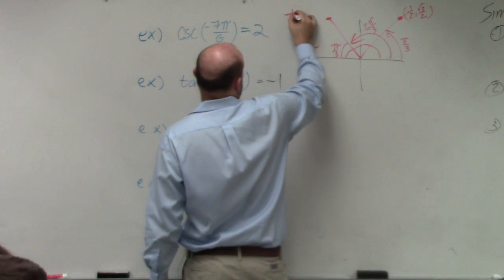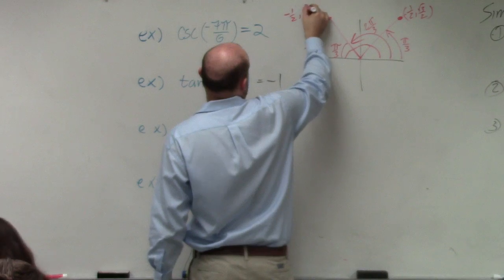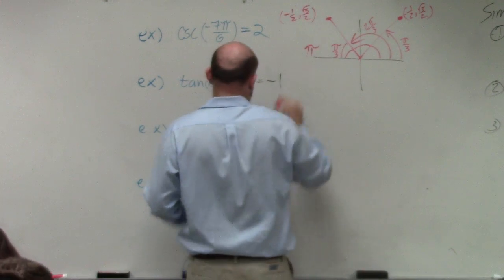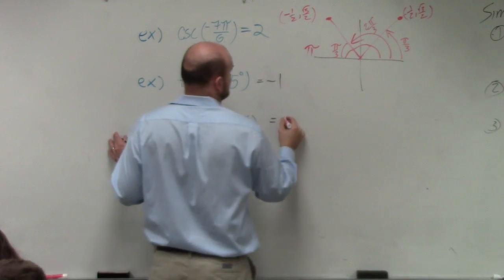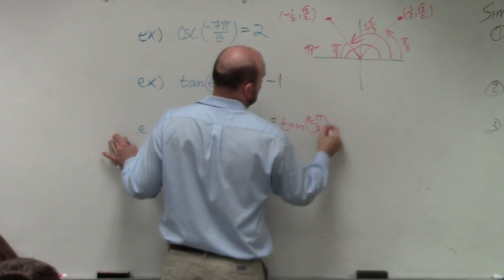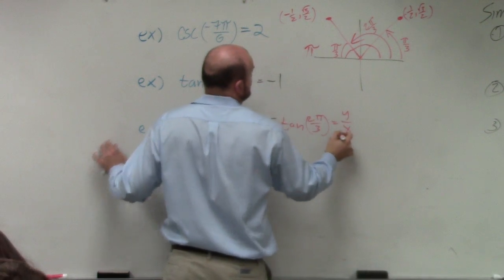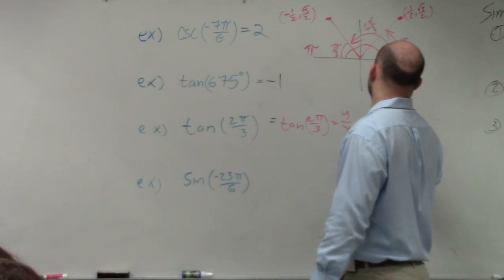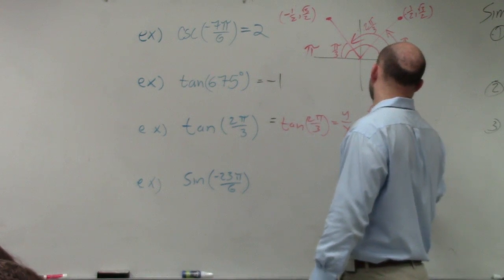So therefore, it's (-1/2, √3/2). To find the tangent, the tangent of 2π over 3 we know is y over x, which in this case is √3/2 divided by -1/2.